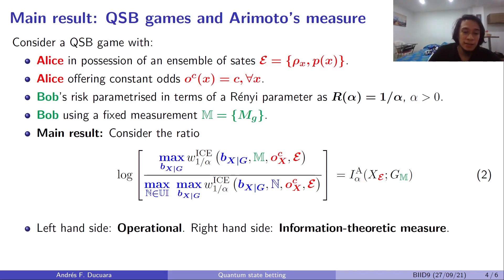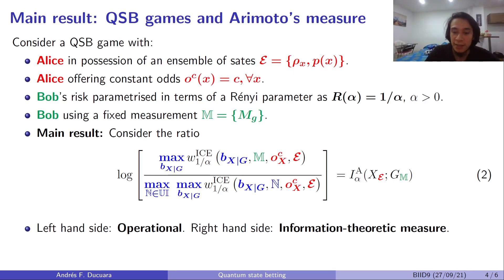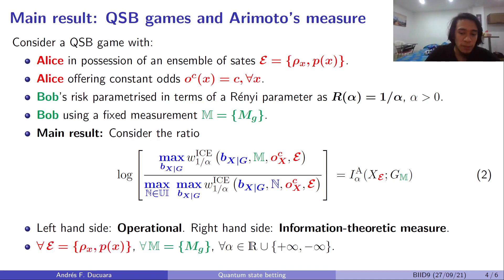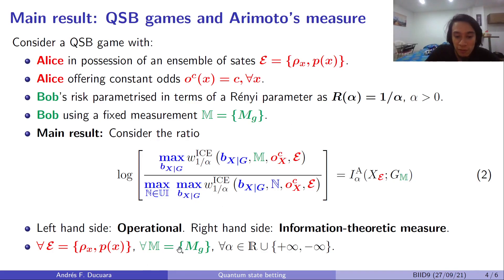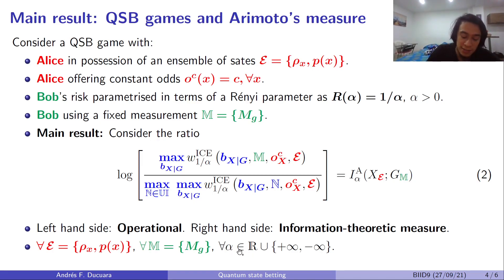We highlight that the left-hand side is completely operational, while the right-hand side is an information theoretic measure. We also highlight that this result holds for any ensemble E, any POVM M, and it also holds for negative alphas, and therefore it holds for all alphas in the extended line of real numbers.